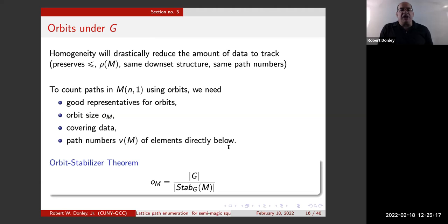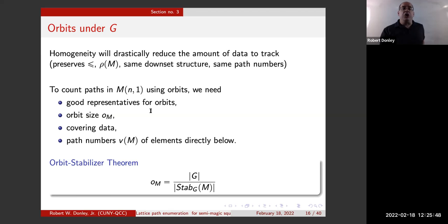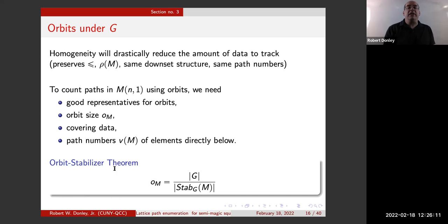If we're going to pass to orbits, the group action drastically reduces the amount of data we need to keep track of. Since it preserves the partial ordering, ranks, and down-set structures, it'll preserve all path numbers for a given orbit. To construct the orbit poset, we need good representatives for orbits, orbit sizes, covering data, and path numbers below any given element to use Pascal's rule. The heavy lifting is done by the orbit-stabilizer theorem.